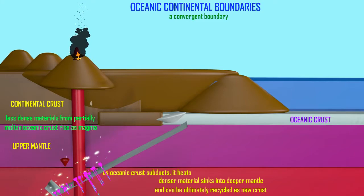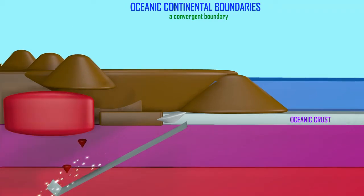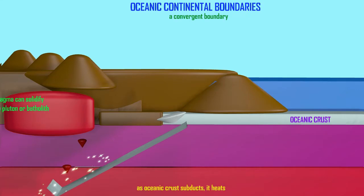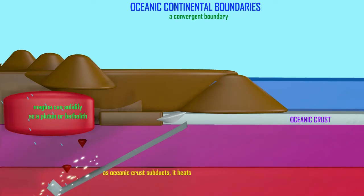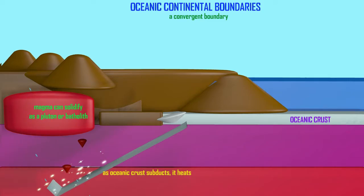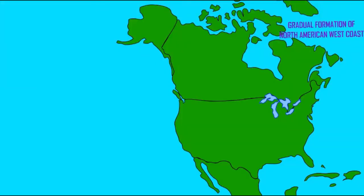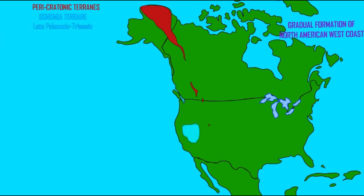The intermontane terrains contributed to northern Washington State, western Canada, and Alaska. During the Cretaceous through the Eocene, another series known as the insular superterrains was added to western North America, contributing much of the state of Alaska, Vancouver Island, and other regions. As this subduction and these collisions were occurring, a number of mountain-building events known as orogenies occurred.